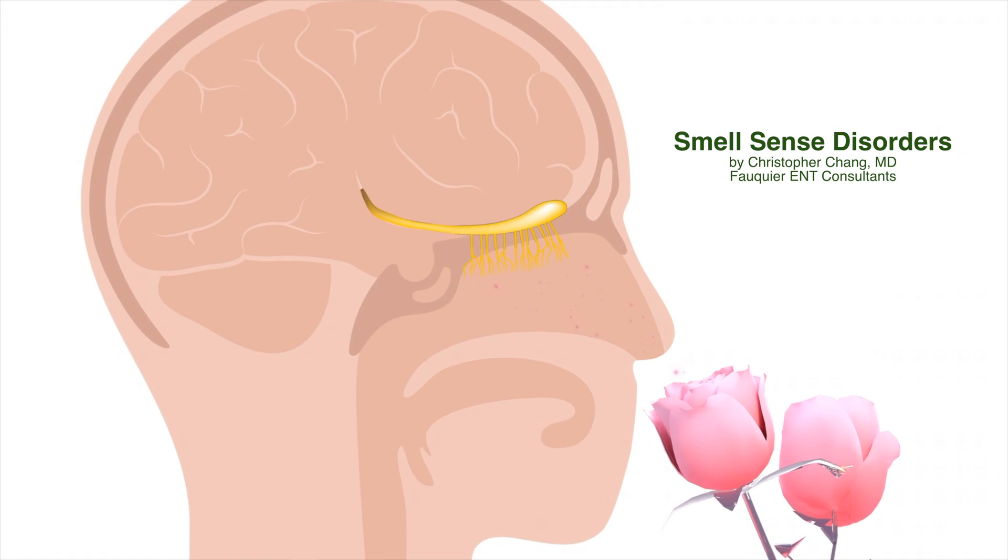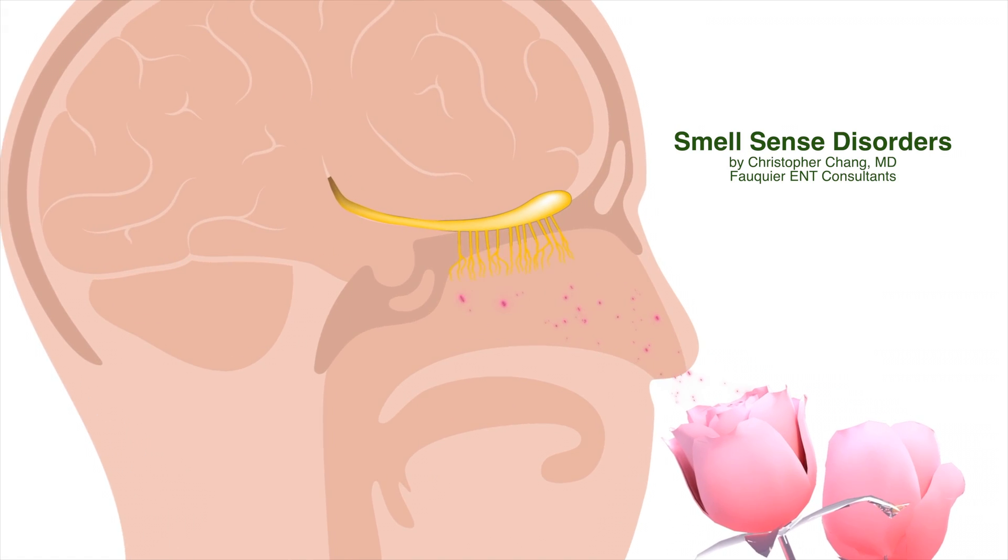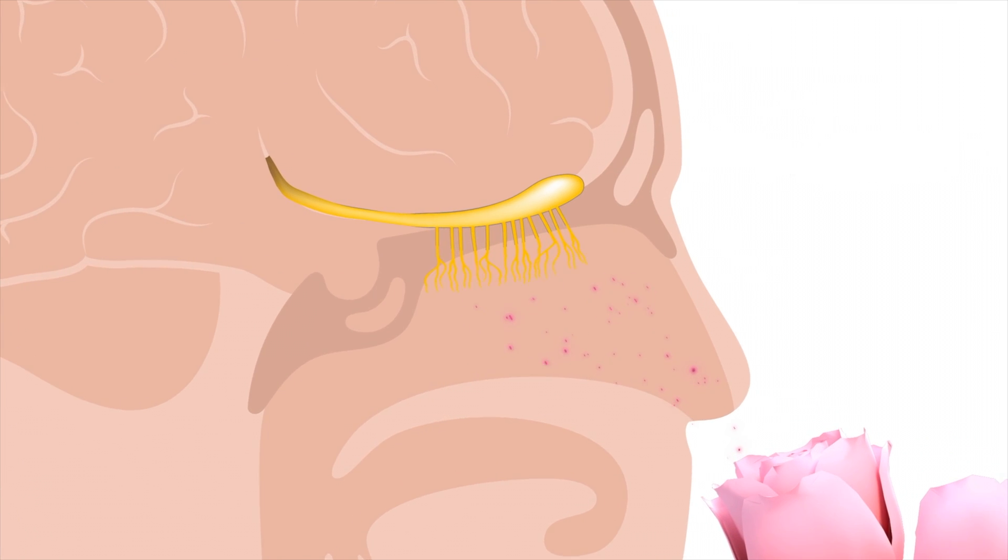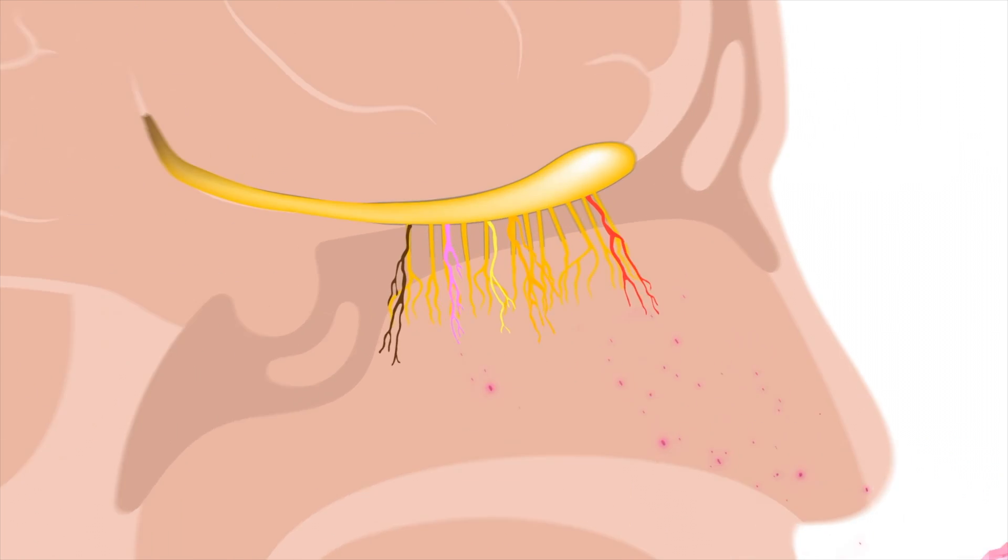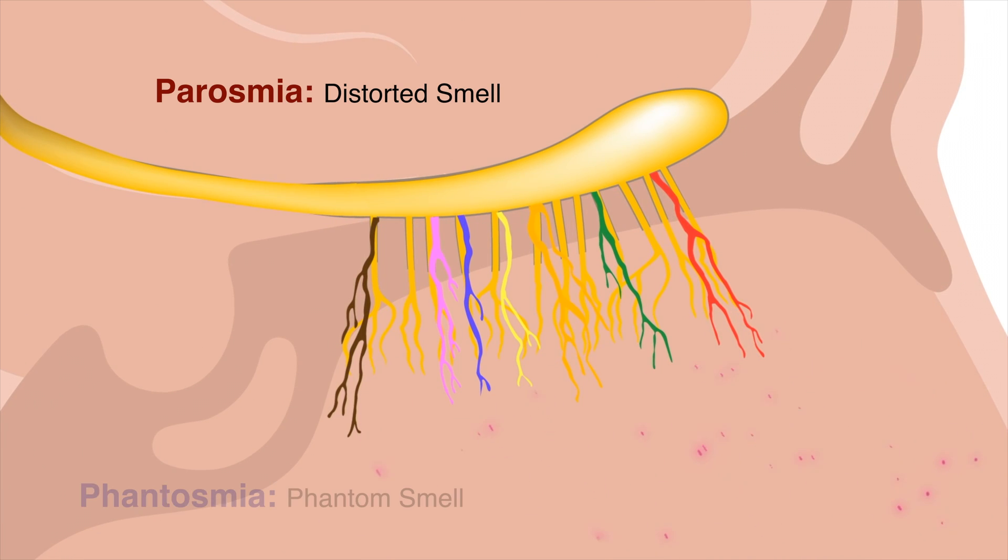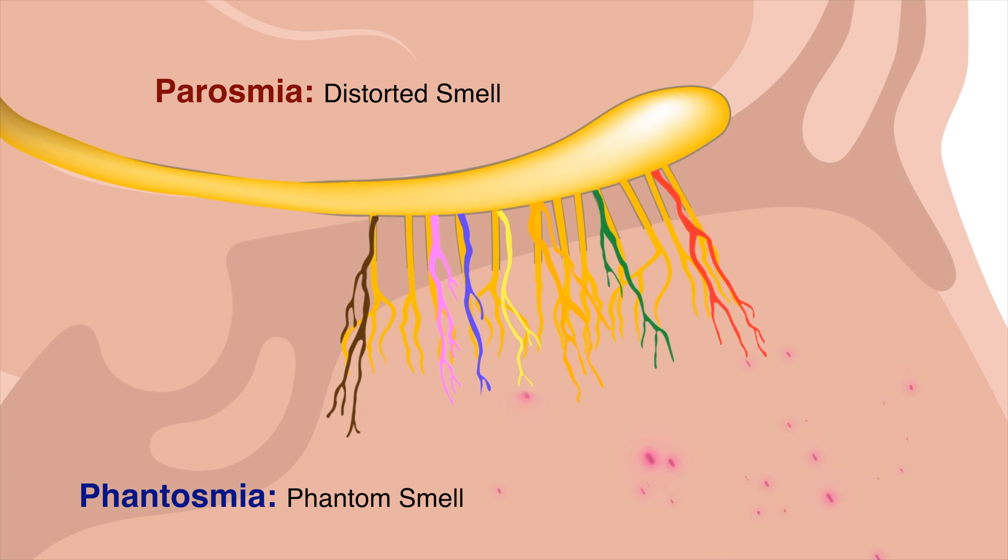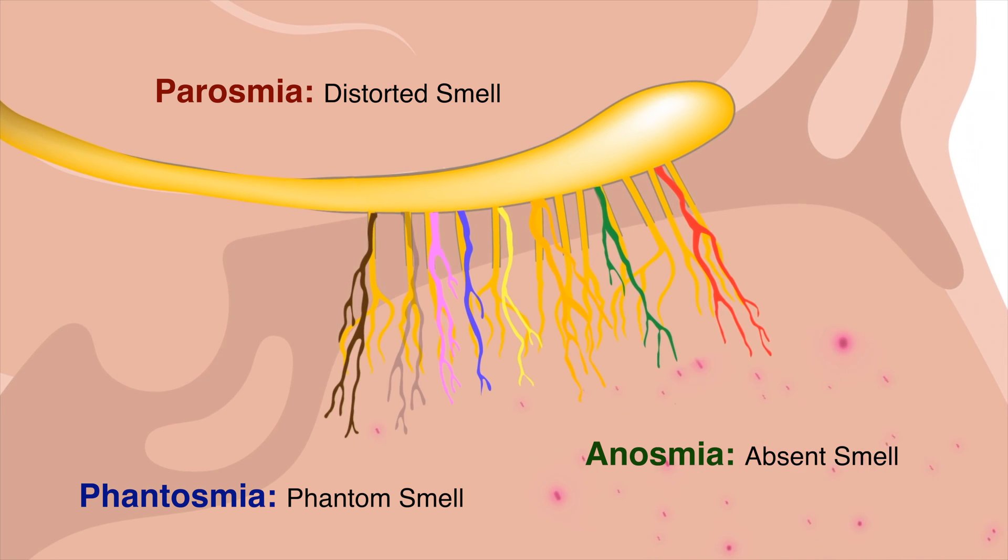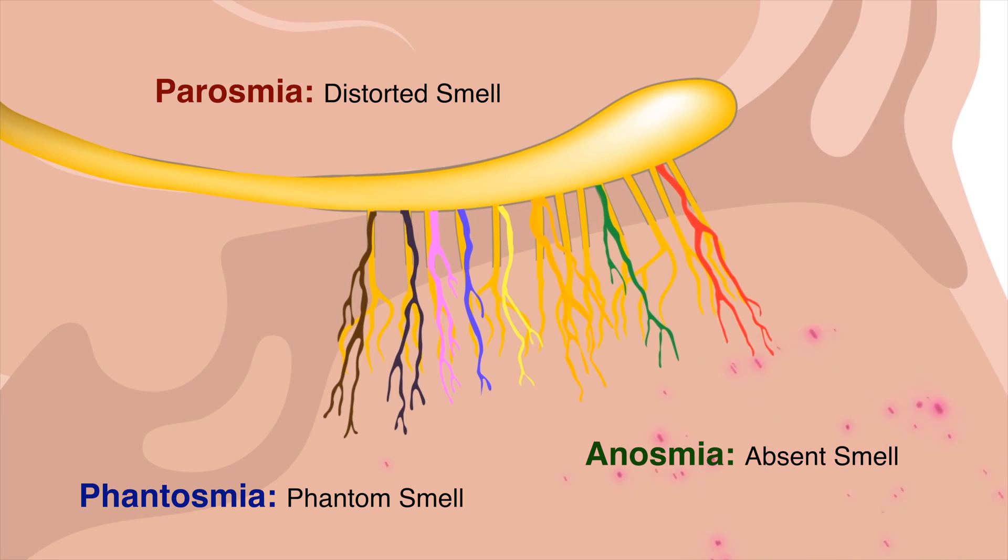There are many different types of smell disorders that can significantly decrease a person's quality of life. Such smell perception disorders, or dysosmia, may include parasmia, which is a distorted sense of smell; phantasmia, smelling something that is absent, also known as olfactory hallucination; and anosmia, a complete sense of smell loss.